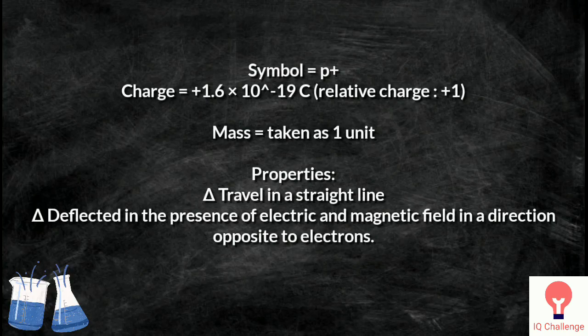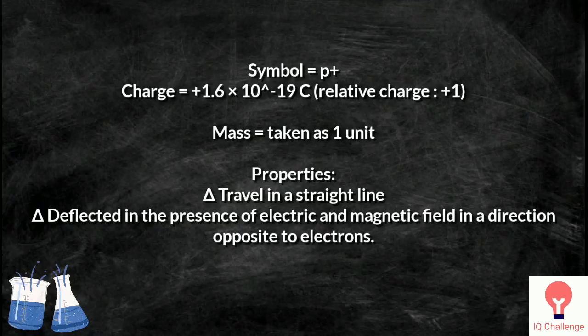Its symbol is P+. Its charge is +1.6 × 10^-19 Coulomb and relative charge +1. Its mass is taken as 1 unit. The properties of a proton are: they travel in a straight line, and they are deflected in the presence of electric and magnetic field in a direction opposite to electrons.